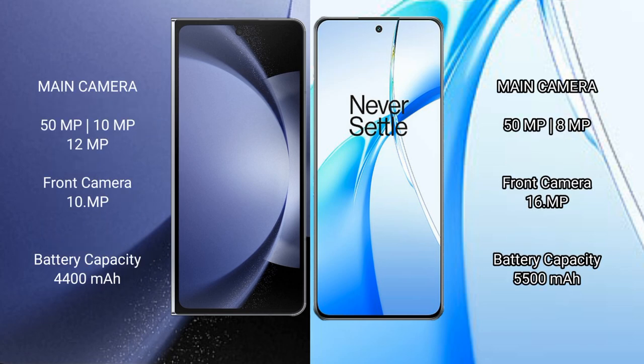Samsung Galaxy Z Fold 6 features a rear triple camera setup: 50MP plus 10MP plus 12MP, and a 10MP front camera. OnePlus Nord CE 4 features a rear dual camera setup: 50MP plus 8MP, and a 16MP front camera.